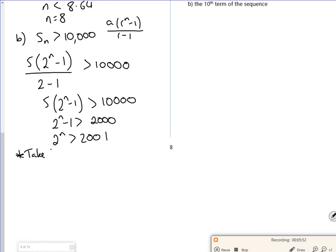So I'll take log to base 2. Log base 2 of 2 to the n is greater than log base 2 of 2001, which gives you n is greater than 10.9665. So n is 11.